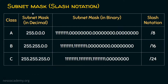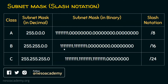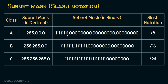The subnet mask can be represented in decimal format. Converting to binary, class A (255.0.0.0) has all ones in the first octet and zeros in the remaining three. Class B (255.255.0.0) has all ones in the first two octets and zeros in the next two. Class C (255.255.255.0) has all ones in the first three octets and zero in the last. We can also use slash notation: class A is /8 (eight ones), class B is /16 (sixteen ones), and class C is /24 (twenty-four ones). The subnet mask can be expressed in decimal, binary, or slash notation.